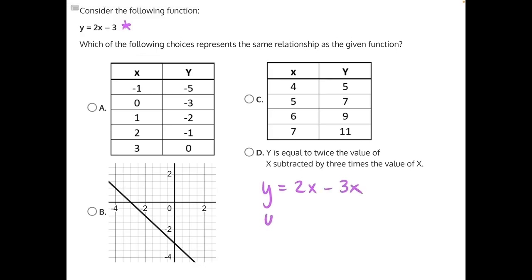So when we do the subtraction, we'll have 2 minus 3 is a negative 1x, or just negative x. And this equation does not match our original function, and that makes answer choice D incorrect.